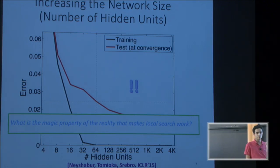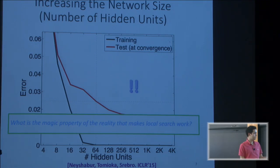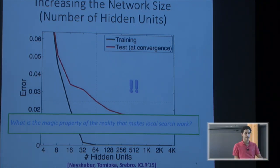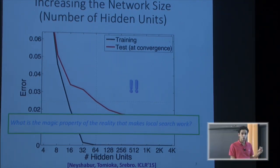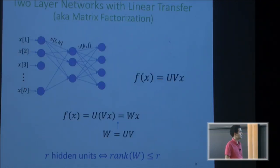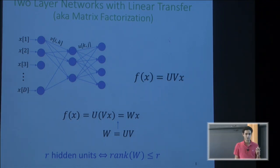The real magic is that we use a very specific optimization algorithm to find a solution. There exist bad solutions that will overfit and not generalize. But using a simple local search algorithm — gradient descent — converges to a low-complexity solution. The problem is that I cannot understand what 'low complexity' means here, because it can't be captured by the number of hidden units or size of the network. It must be some other complexity measure, which led us to study the even simpler problem of matrix factorization.